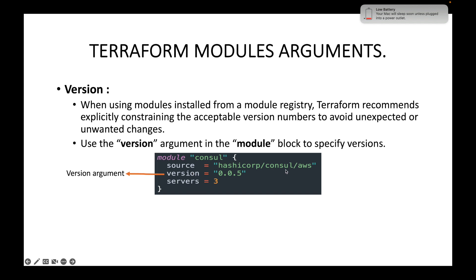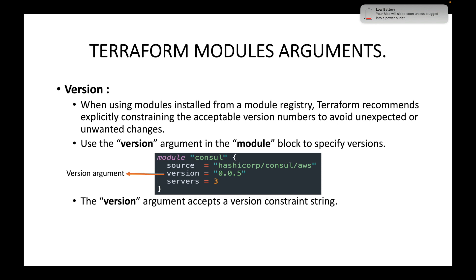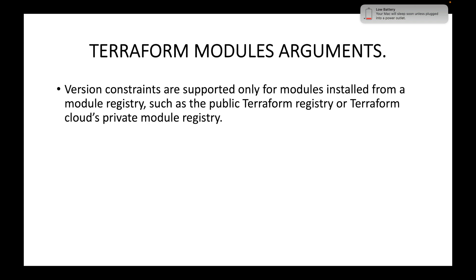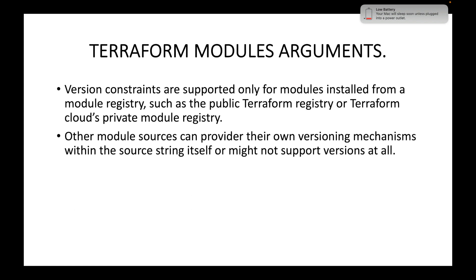You can specify which version of the module you want to use when creating your infrastructure. The version argument accepts a version constraint string. Terraform will use the newest installed version of the module that meets the constraint; if no acceptable versions are installed, it will download the newest version that meets the constraint. Version constraints are supported only for modules installed from a module registry, such as the public Terraform registry or Terraform Cloud's private module registry.